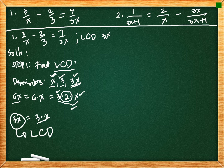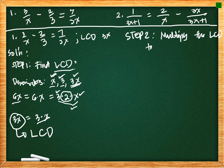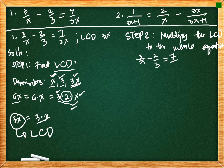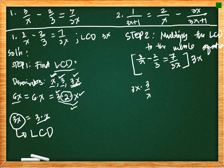Step 2: after finding the LCD, multiply it to the whole equation. We have 3 over x minus 2 thirds equal to 7 over 3x, and we multiply through by our LCD, 3x. So we have 3x times 3 over x, minus 3x times 2 thirds, equal to 3x times 7 over 3x.